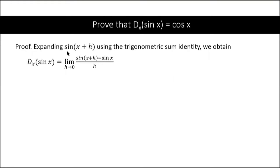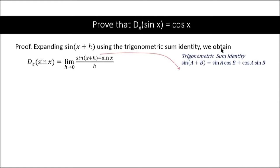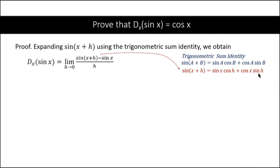We are going to expand sine of (x plus h) using the trigonometric sum identity. The identity states that sine of (a plus b) equals sine a cosine b plus cosine a sine b. Applying this, sine of (x plus h) equals sine x cosine h plus cosine x sine h.